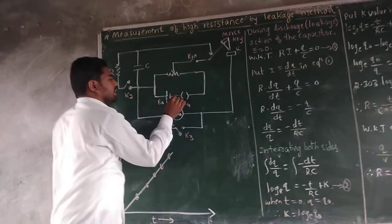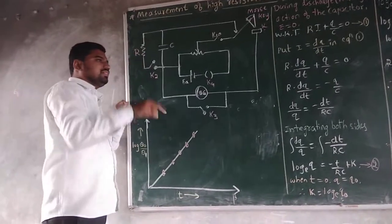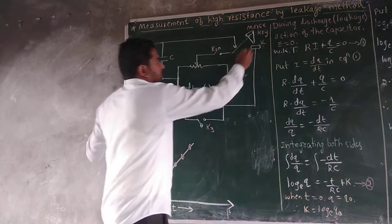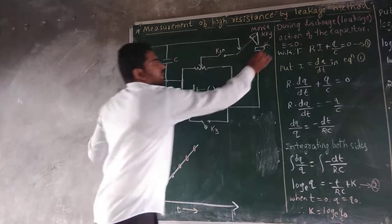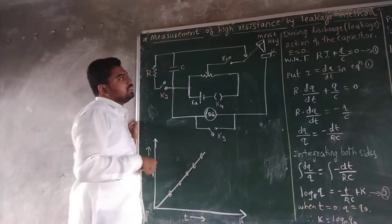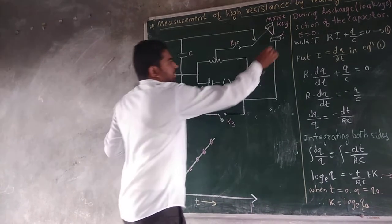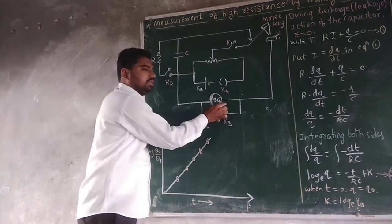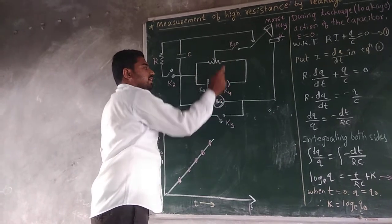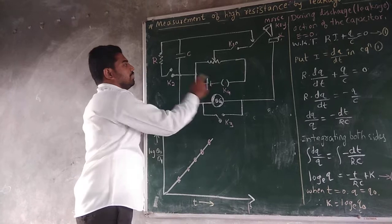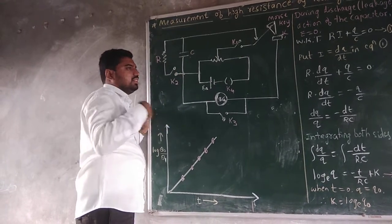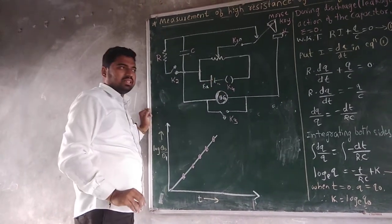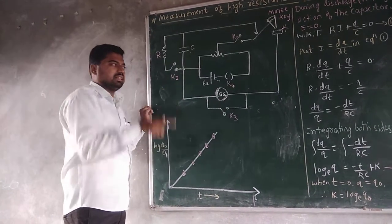Initially, keys K1 and K4 are pressed, which charges the capacitor. After releasing them, you tap the MOS key. When the MOS key is tapped, the ballistic galvanometer is connected and shows a deflection. When K1, K4, and the MOS key are all on, the capacitor discharges — charges flow, producing a potential difference, and the ballistic galvanometer shows the deflection.